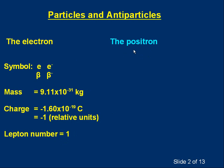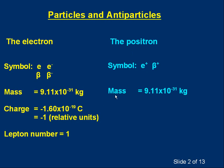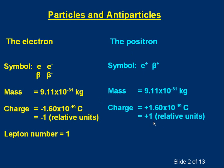Now let's talk about the positron, which is an elementary particle like the electron. Its symbol is e with a plus sign. There is a type of radioactive decay called beta plus decay — rather than electrons being emitted from nuclei, positrons are emitted, referred to as beta plus particles. The mass of a positron is the same as the mass of an electron. The charge is opposite: +1.6 × 10⁻¹⁹ coulombs, or +1 in relative units. It is a member of the lepton family with a lepton number of −1.